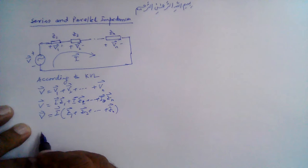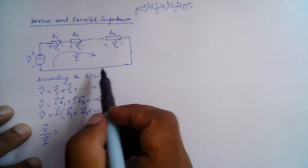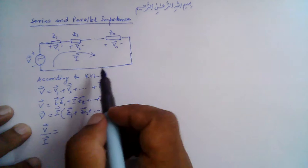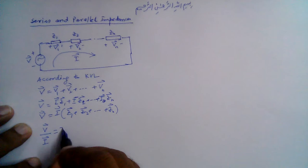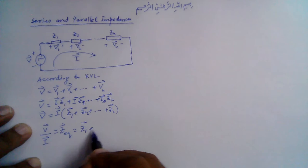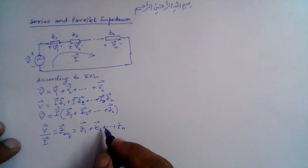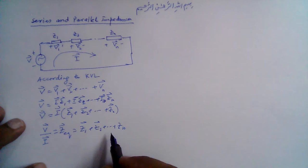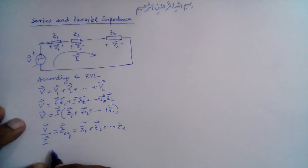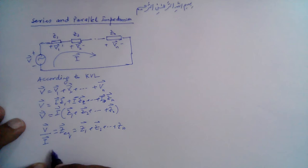So v-bar over i-bar is the equivalent impedance of this circuit, and that is equal to z1 plus z2 and so on till zn. Like a resistive circuit, the equivalent impedance of impedances in series is given by their sum: z-equivalent equals z1 plus z2 and so on till zn.